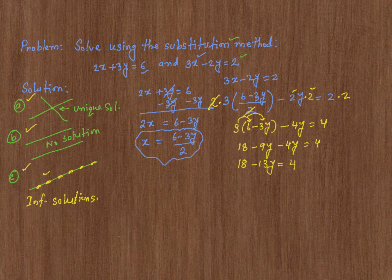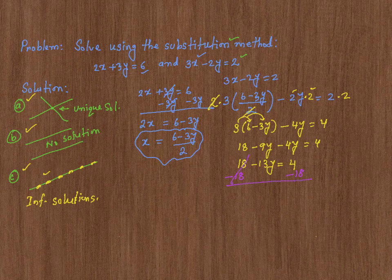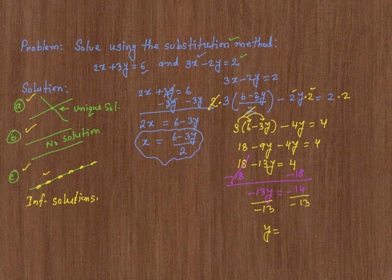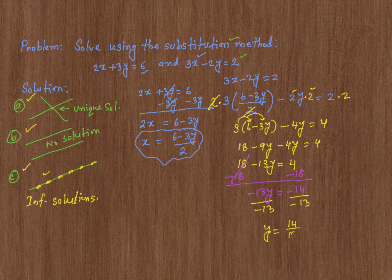And then I subtract 18 from both sides. Then I get, these two cancel out, negative 13y equals negative 14, because 4 minus 18 is negative 14. Now, I'm going to divide both sides by negative 13, that will give me y equals 14 over 13, because the negatives cancel out. Now I got y equals 14 over 13, now I can find the x.